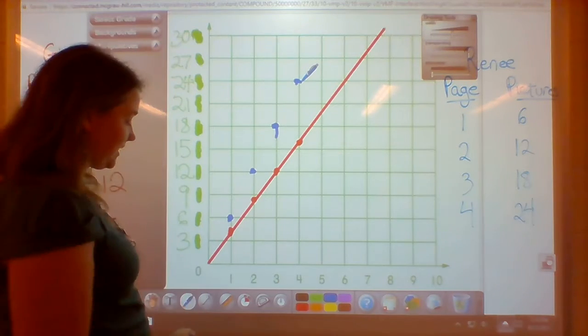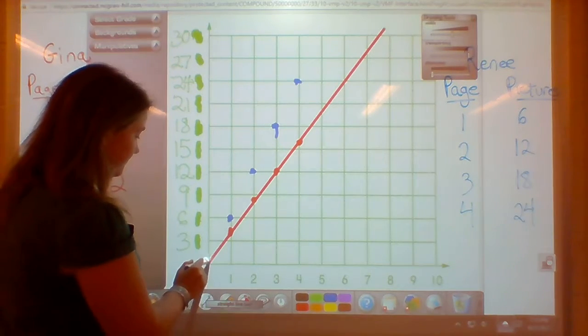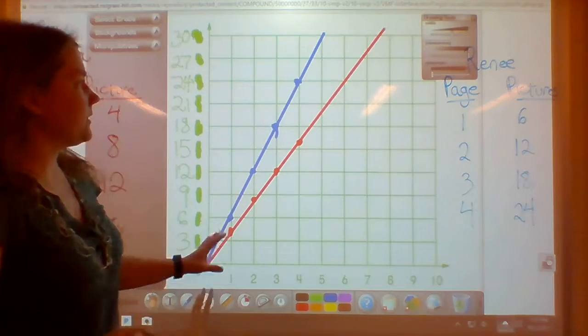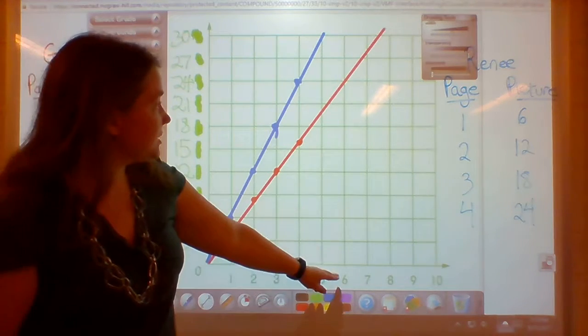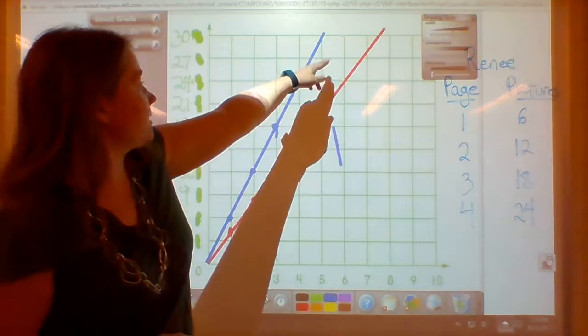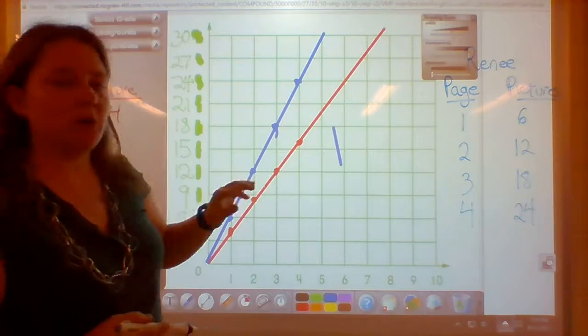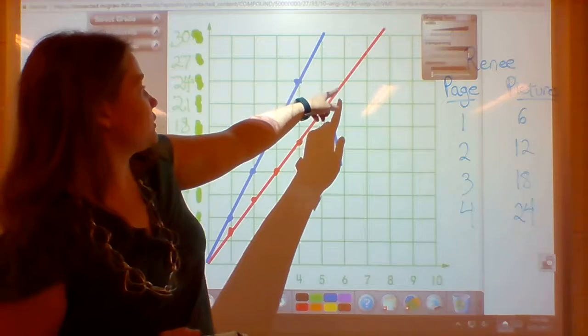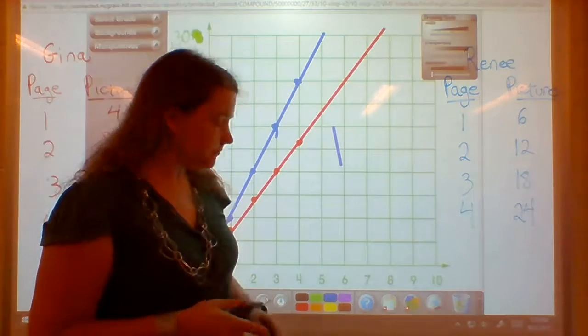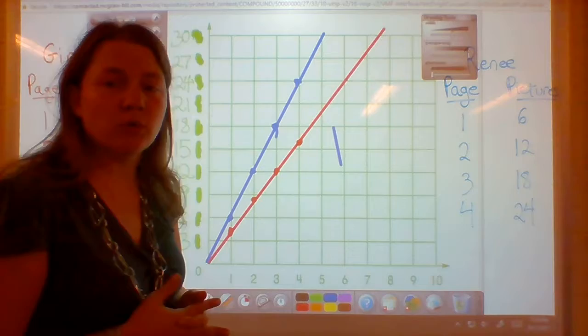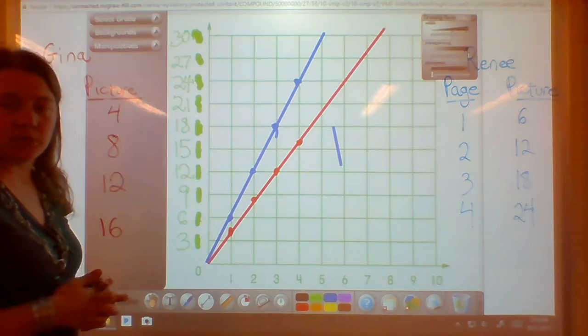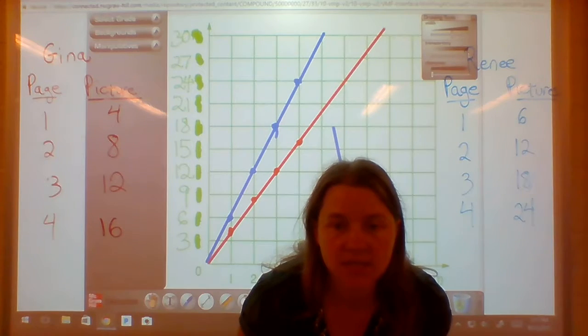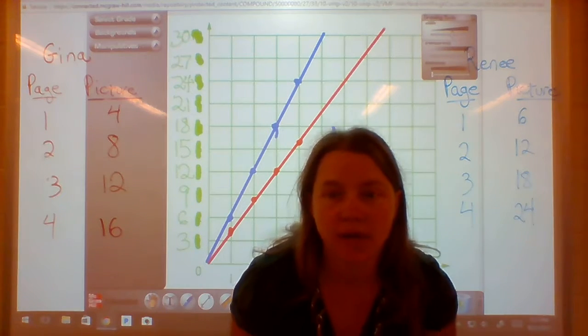And what we're going to do is we're going to connect that next line, project it all the way up, and we can see how many more pictures she'll have. So on page 6 we can see that Renee will be off the chart. And Gina, on page 6, will still have 24 pictures. Renee's going to have more than 30. And that's how using a coordinate grid can help you to see how everything is going to turn out.